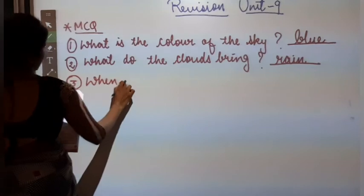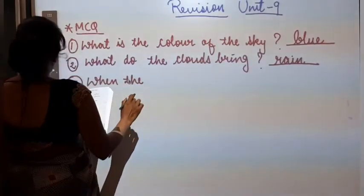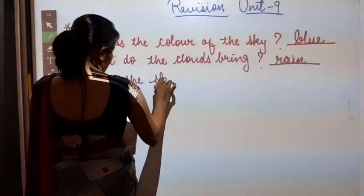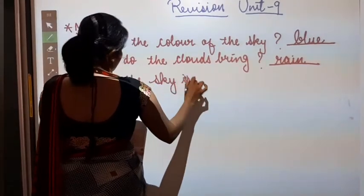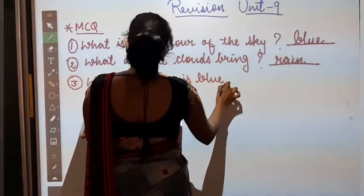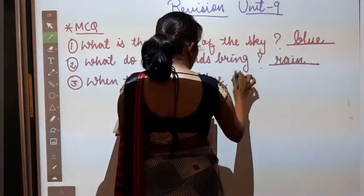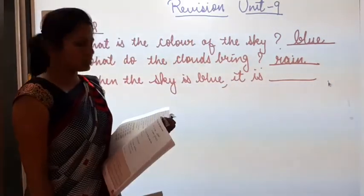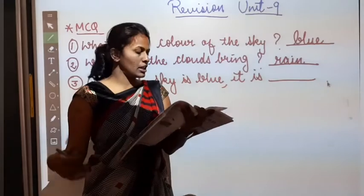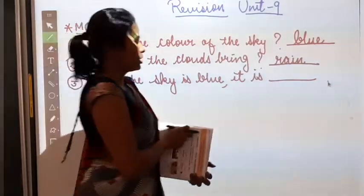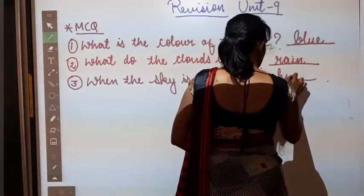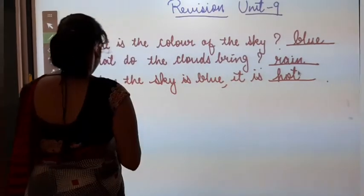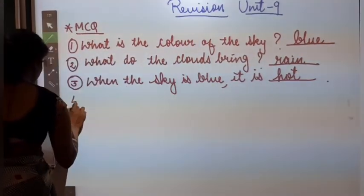When the sky is blue, it is dash. When the sky is blue, it is dark, rainy, cold or hot. So what do these clouds bring? So the answer will be hot. Then number 4.